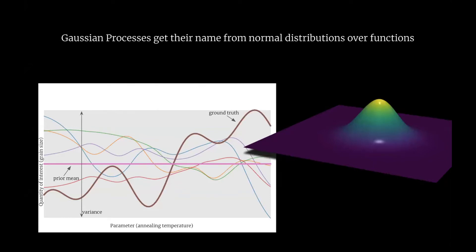In the beginning we can say measurements probably scatter around this prior mean at a certain width — but that's all we know. Here, what I've done is draw functions from this prior mean. We see the prior mean in the Gaussian process setting on the right-hand side, shown as colorful curves. Before we have even started data collection, all kinds of functions are possible to be the model function that day. As an example, the parameter could be annealing temperature and the quantity of interest could be grain size — but those are just placeholders.